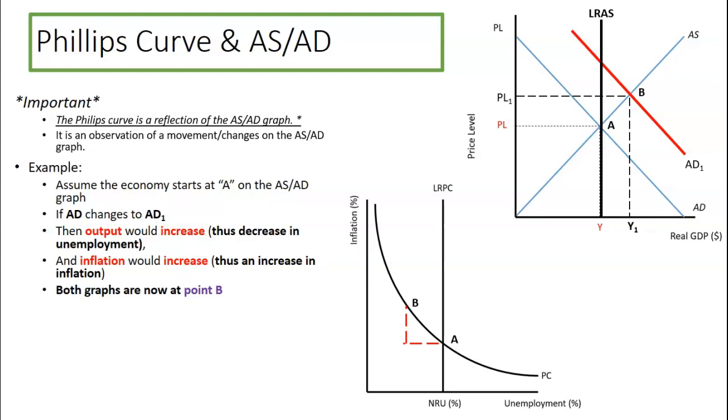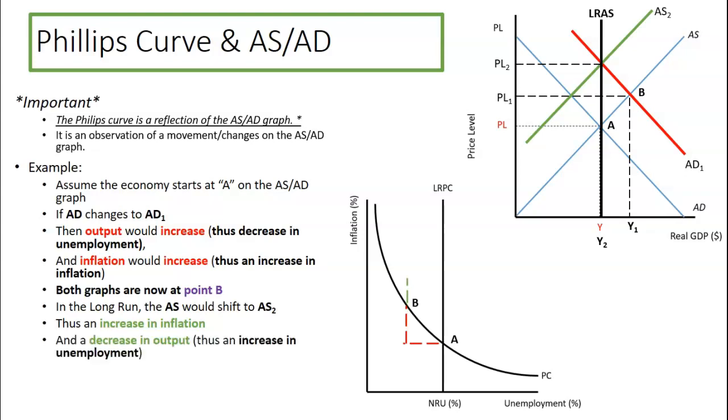Again, it's just the Phillips curve is just interpreting things. So, what would happen next? Well, in the long run, the economy self-adjusts, meaning the aggregate supply curve is going to shift over to AS2. So what happens? We have an increase in inflation again from PL1 to PL2. So I just kind of make a little dotted line and say, yep, there's my inflation. And then what else happened? Well, we moved from Y1 to Y2. So our real output decreased, which means we had an increase in unemployment.